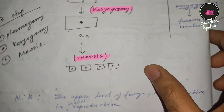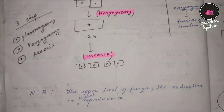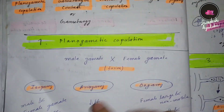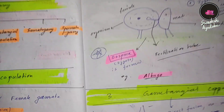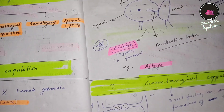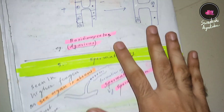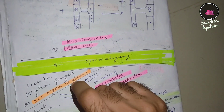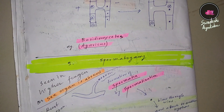That covers sexual reproduction in fungi. To summarize: remember the types of plasmogamy, the examples of isogamy and anisogamy, how oospore and zygospore are formed, and which higher fungi show which type of plasmogamy. Thanks for watching — please subscribe.